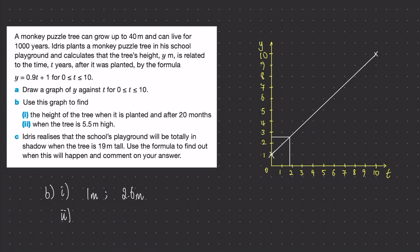For part ii, when the tree is 5.5 meters high, well that is a y coordinate for us because it's a height. So we're going to come across and coming down we see that it's meant to be 5 years.